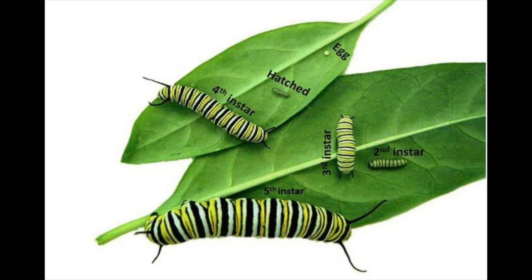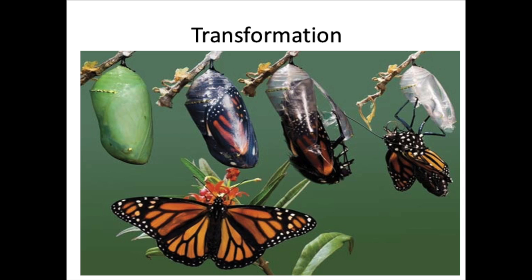Just below that, you can see the caterpillar just as it's hatched. In the lower leaf, you see the caterpillar in the second instar phase, then in the third right next to that. The fourth is above back on that top leaf, and then below you finally see the caterpillar in its last phase, which is called the fifth instar. From the fifth instar, they then form a chrysalis so that they can begin the transformation to become a butterfly, and it is in that chrysalis that they transform from being a caterpillar to emerging as a butterfly, like you see here in this image.